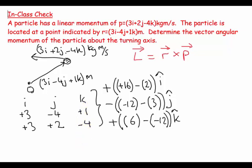Next, I work out this simple math. 16 minus 2 is plus 14i. And then minus 12 minus 3 is minus 15 with a minus in front of it, making that plus 15j. And then 6 minus minus 12 is like 6 plus 12, which would be plus 18 with a plus sign, so plus 18k.